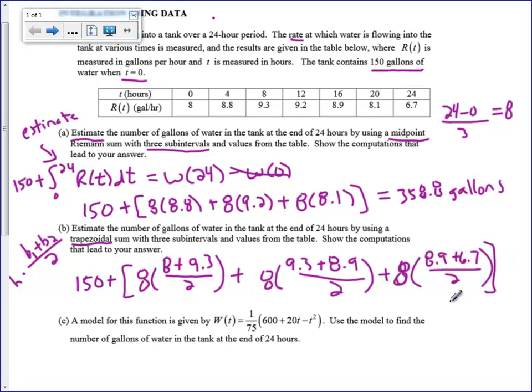And that worked out to be, of course, without a calculator, we would leave that alone. That worked out to be, I'm sorry, it was 354.4 gallons. So that's something that's new, is a trapezoidal approximation. All right.